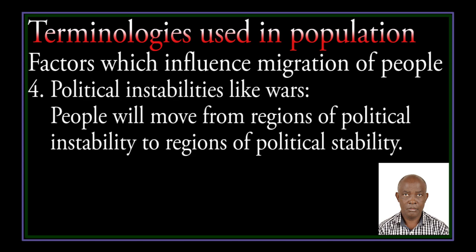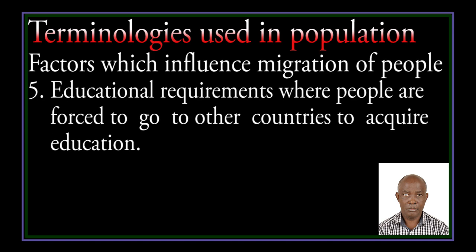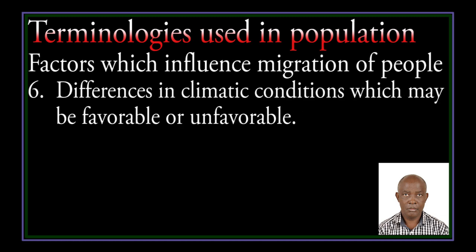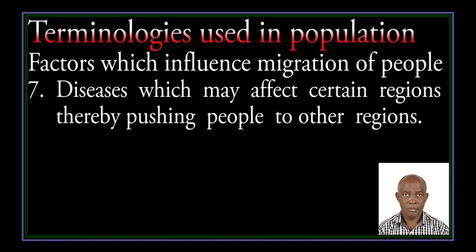Four, political instability — people move from regions of political instability to regions of political stability. Five, educational requirements where people are forced to go to other countries to acquire education. Six, differences in climatic conditions which may be favourable or unfavourable. Seven, diseases which may affect certain regions, thereby pushing people to other regions.